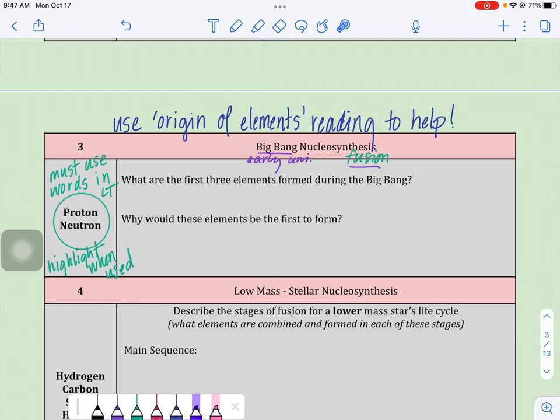So the first thing, this should sound a little bit familiar, but our first three elements in the Big Bang, we did talk through a little bit last unit. So getting our sentence starter going, we had three early elements are, and then we should be able just to list them out. We had hydrogen, we had helium, and we also had lithium.